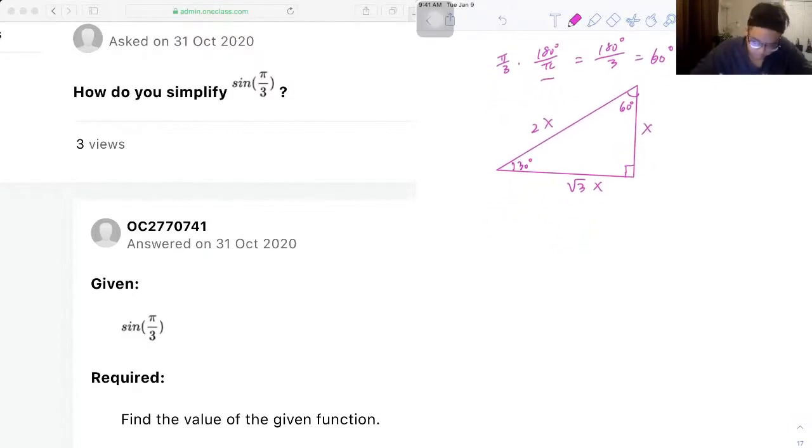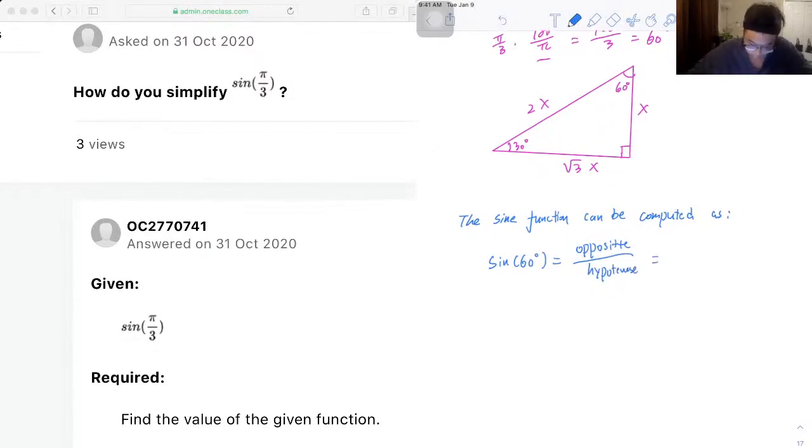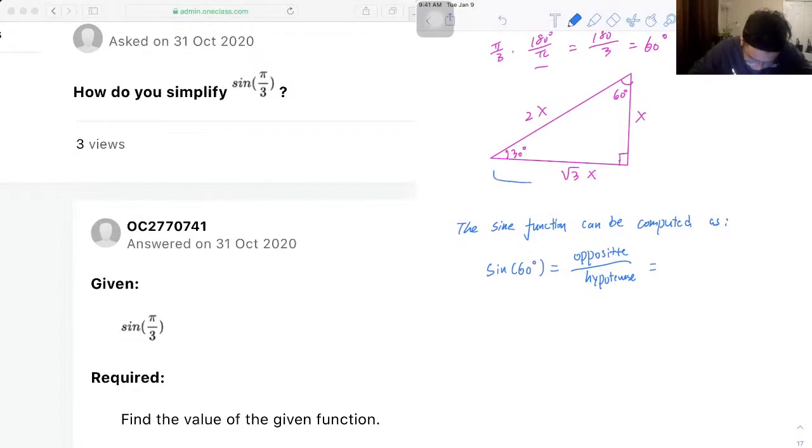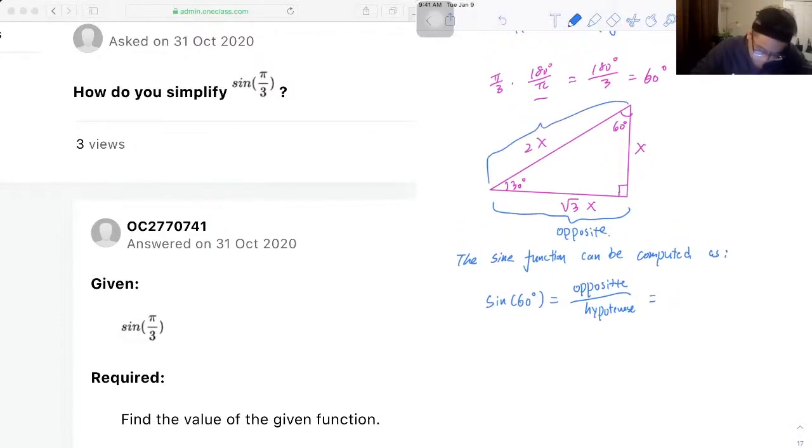So it's a sine function. This sine function can be computed as sine 60 is equal to opposite over hypotenuse, right?